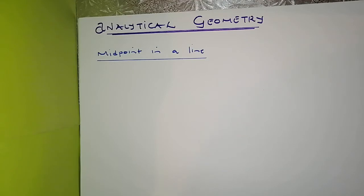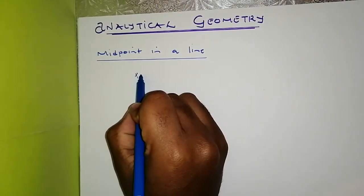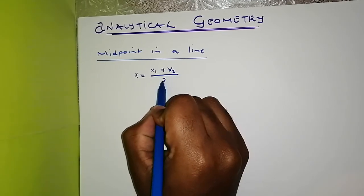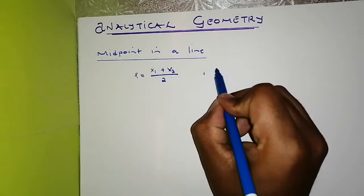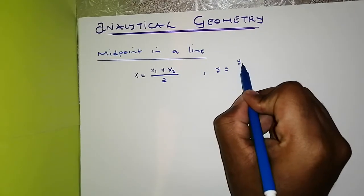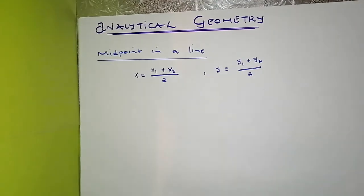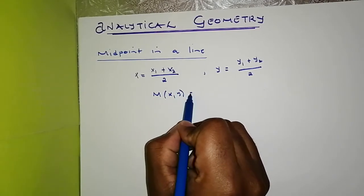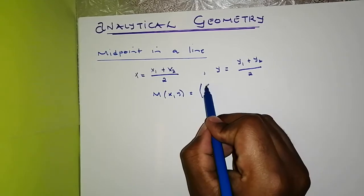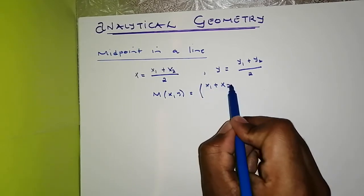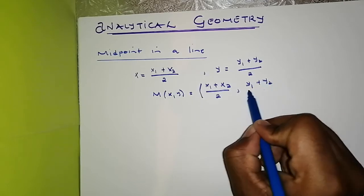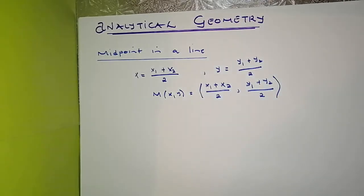A midpoint in a line has a specific formula. The x-coordinate of the midpoint equals (x1 + x2) divided by 2, and the y-coordinate equals (y1 + y2) divided by 2. So the coordinates of the midpoint (x, y) will be: x = (x1 + x2)/2 and y = (y1 + y2)/2.